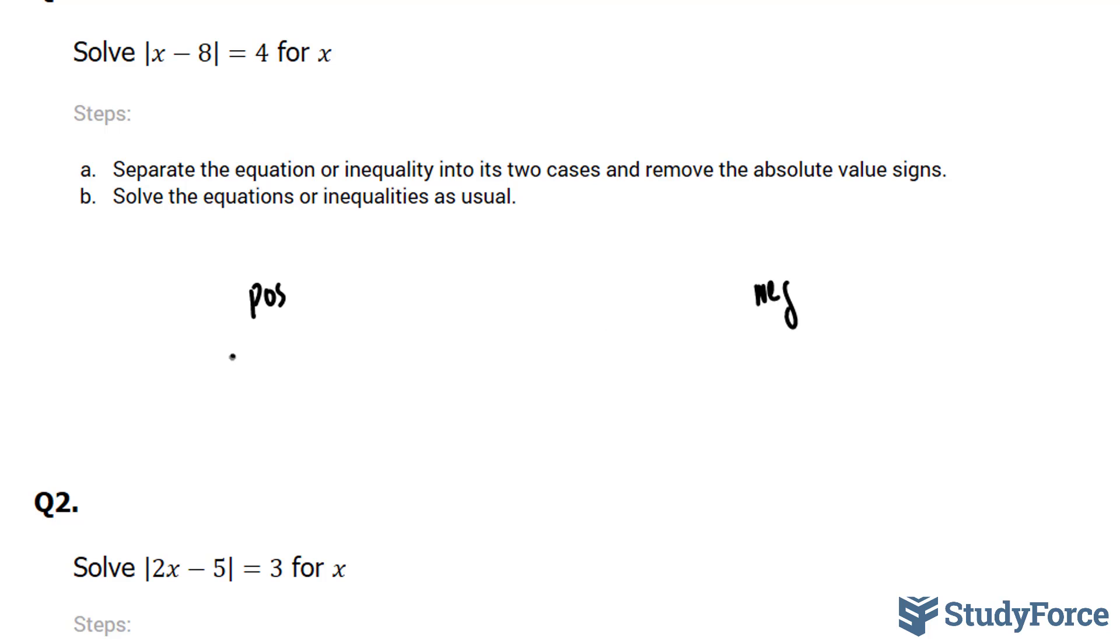Let's start off by solving it when it's positive. x minus 8 is equal to 4. Notice how the absolutes have been removed. 4 plus 8 is equal to x, and that gives us 12.